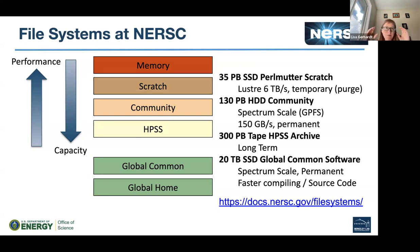At the very top of the hierarchy is memory. Assuming you have stuff you want to keep permanently, you use memory when you're computing. When it comes time to write out, scratch is your first choice. Then after that, we have our community file system — that's our big capacity file system, intended for sharing data with projects at NERSC and with the public at large over the web. If you have a large web repository, it's going to live on community.